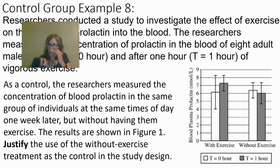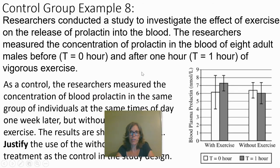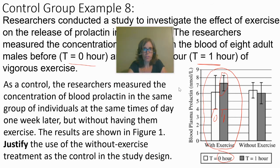Next example: researchers investigated the effect of exercise on the release of prolactin — a hormone — into the blood. They measured prolactin concentration in eight adult males at t=0 hours and one hour after vigorous exercise. The one-hour post-exercise group appears to have higher blood plasma prolactin levels, though the error bars suggest there may be no statistically significant difference.